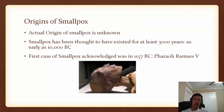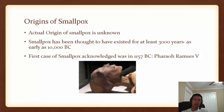The actual origin of smallpox is unknown. The first acknowledged case was in 1157 BC with Pharaoh Ramses V, whose body shows evidence of pustules on the face and head. This places smallpox as having existed at least 3,000 years ago, though researchers suggest it could have existed as early as 10,000 BC.